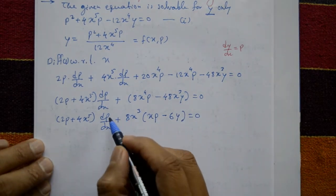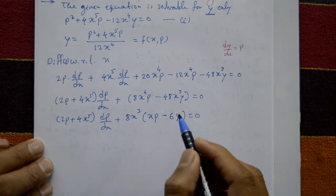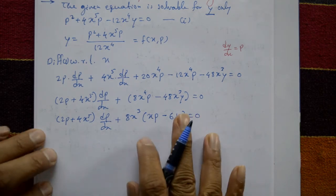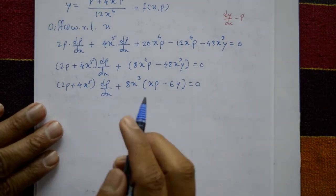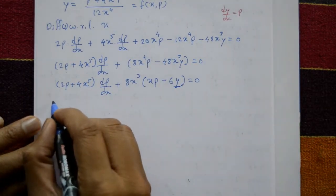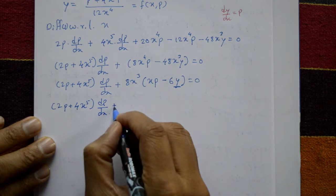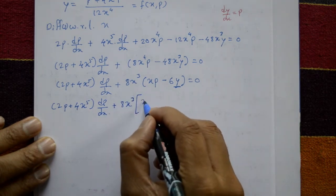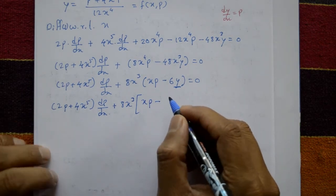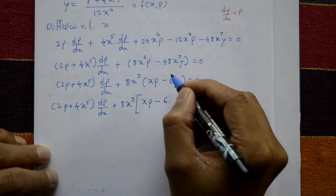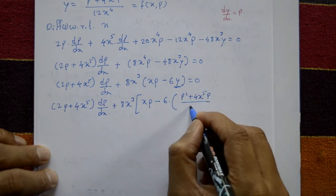We need dp/dx in terms of p and x only, so we must remove y. Using equation number 1, substitute y equals p squared plus 4x to the 5 times p divided by 12x to the 4 into the equation. So: 2p plus 4x to the 5 times dp/dx, plus 8x cubed into xp minus 6 times (p squared plus 4x to the 5 times p divided by 12x to the 4) equals 0.